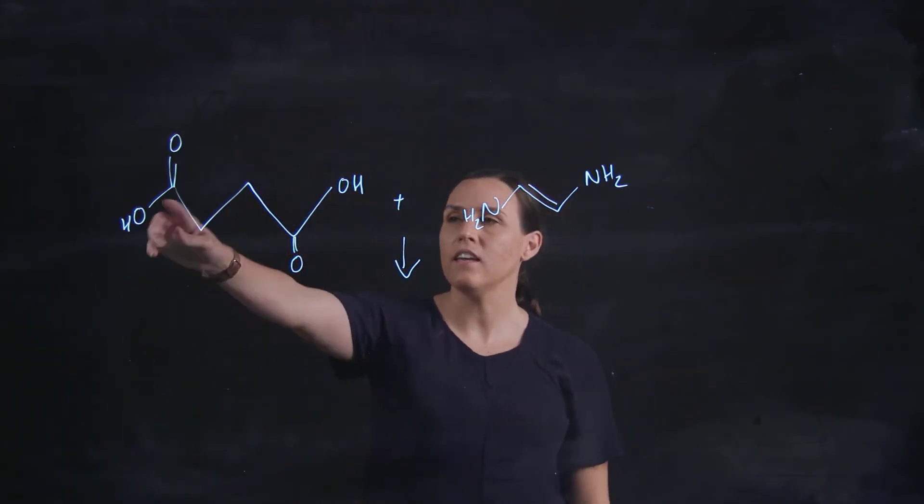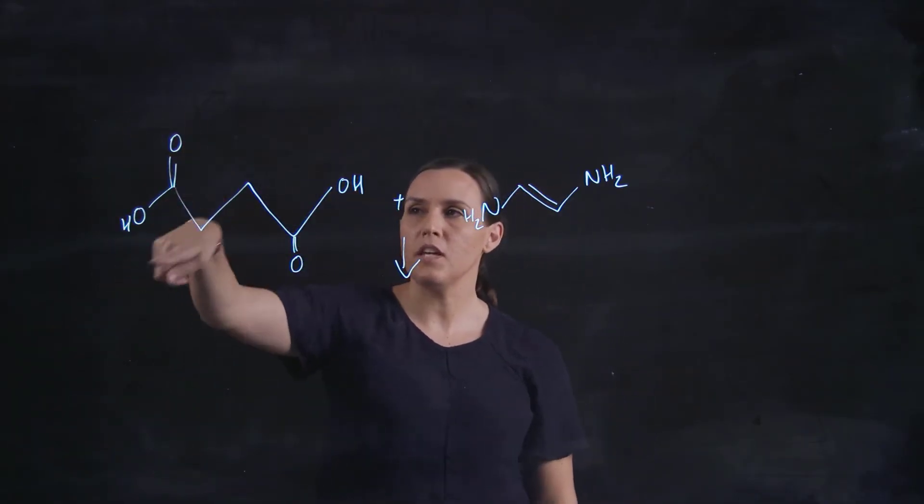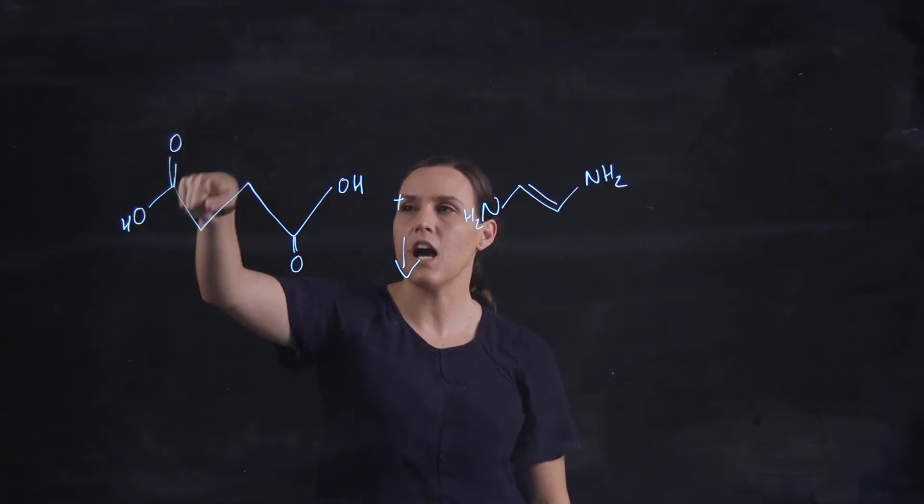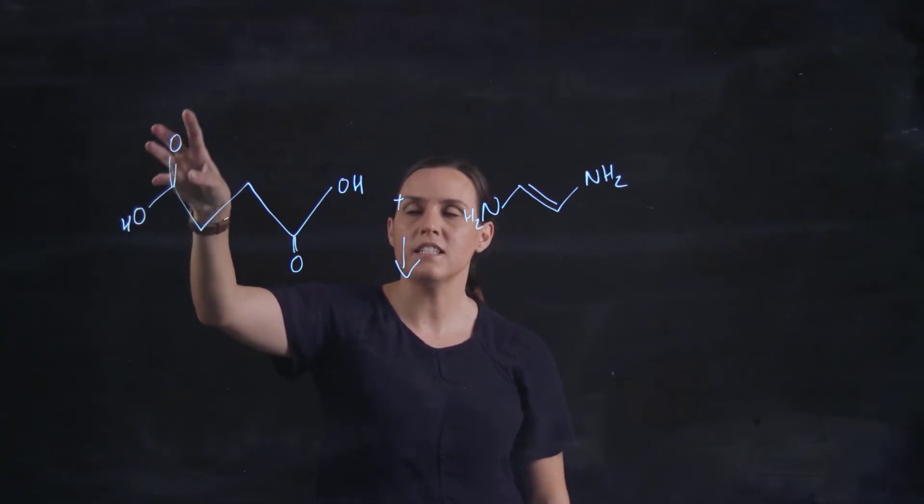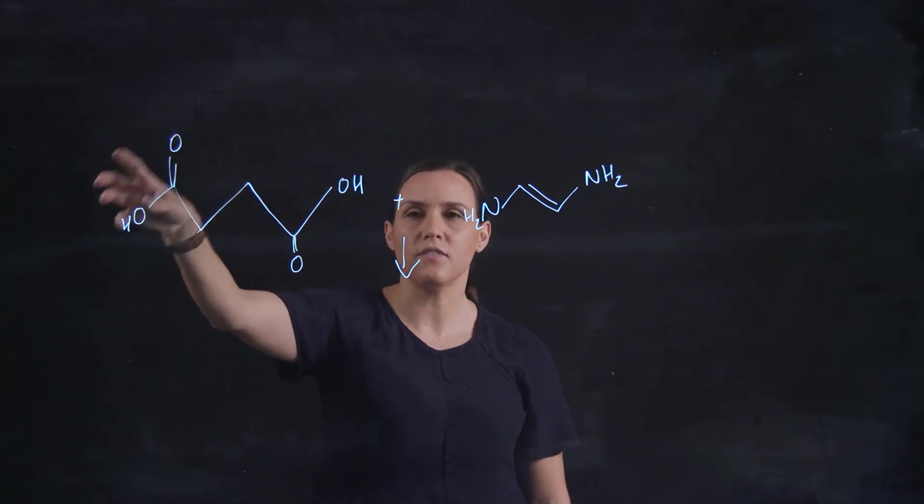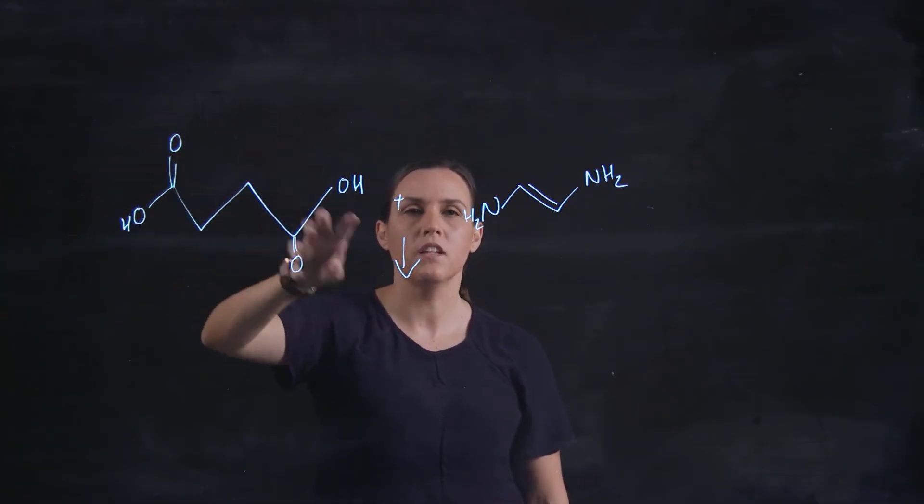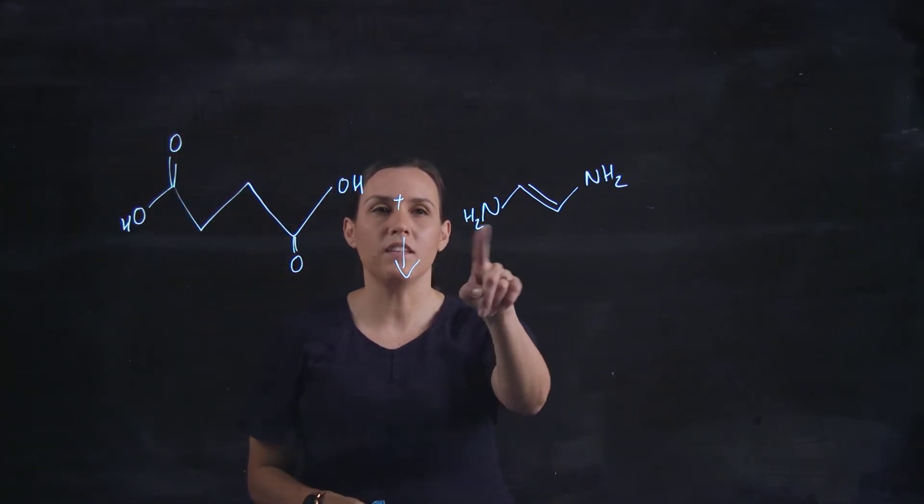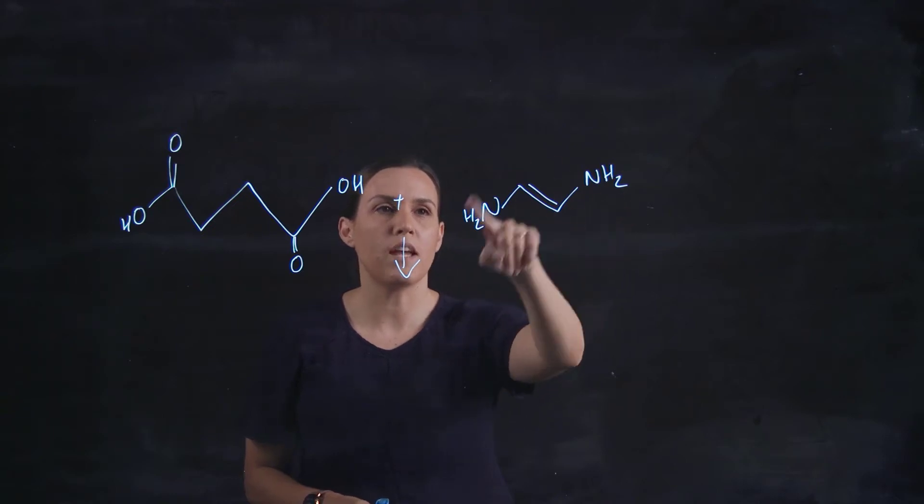So we have a functional group here. This one's got a carbonyl and an OH, so it's a carboxylic acid. And it's a dicarboxylic acid functional group on this molecule. Here we have an amine and we've got two amines.